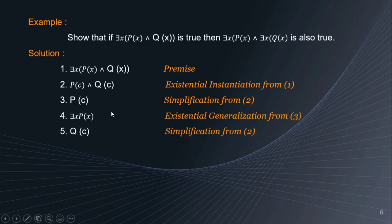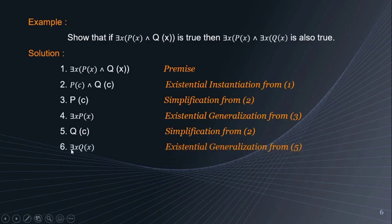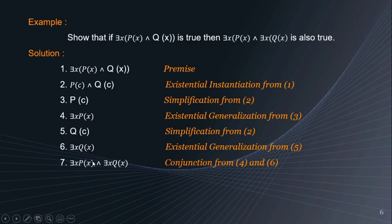Then, similarly, we have Q(c), done by simplification from step 2. Then, there exists x, Q(x) is done by existential generalization from step 5. Therefore, there exists x, P(x) and there exists x, Q(x) is also true, done by conjunction from steps 4 and 6.